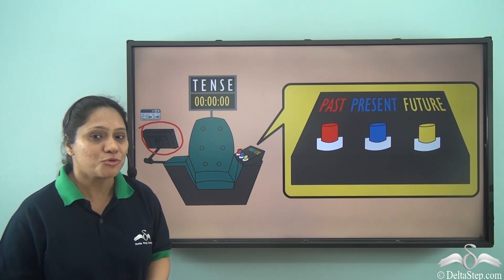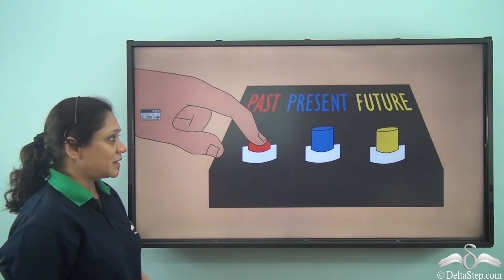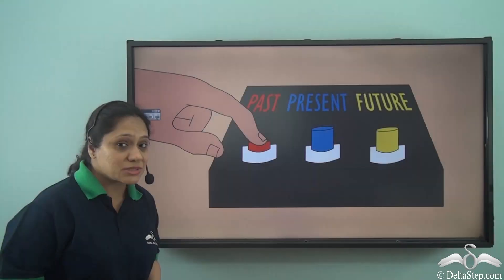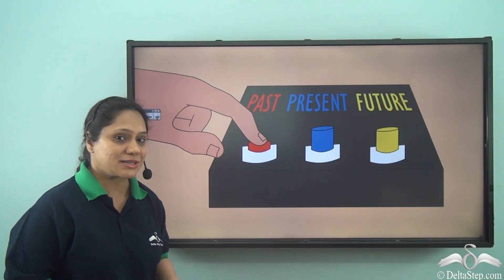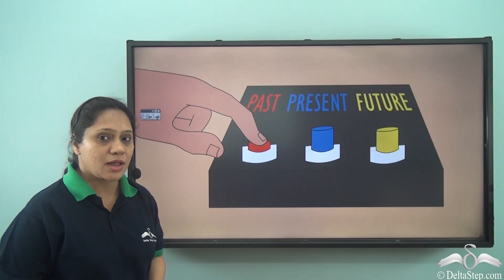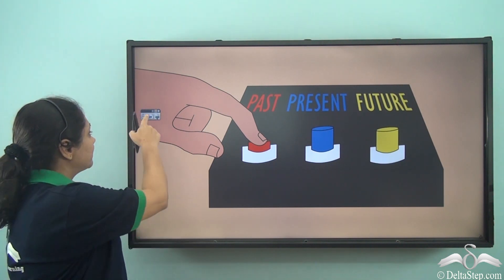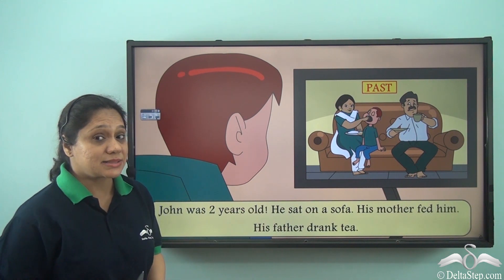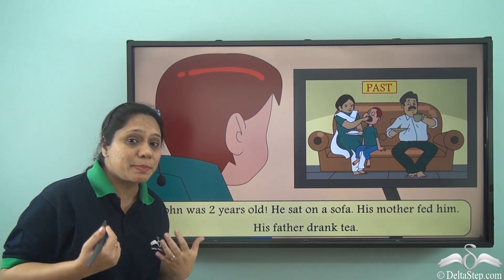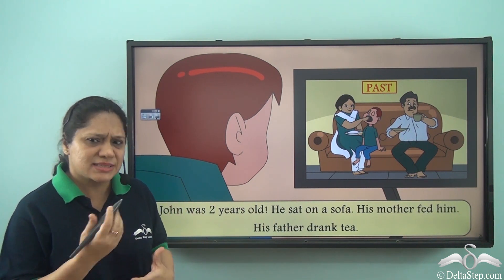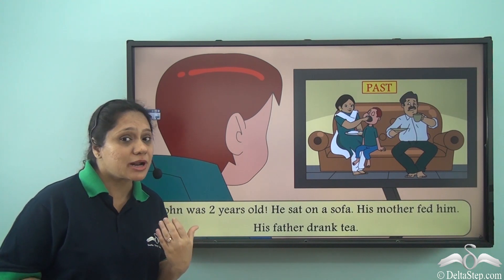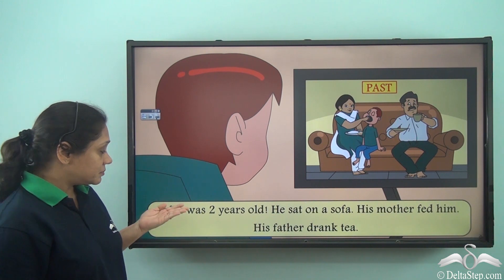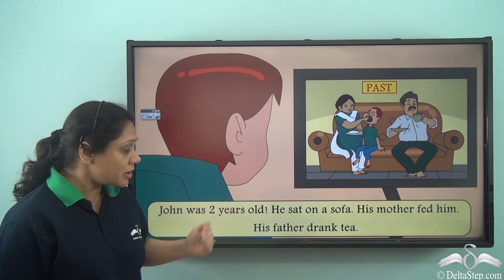So what does he do? He presses one button. Which button? The button which has 'past' written next to it. And what happens? On the screen he can see an old picture of himself. He has seen these pictures in photographs that his mother has shown. So he sees John was two years old.